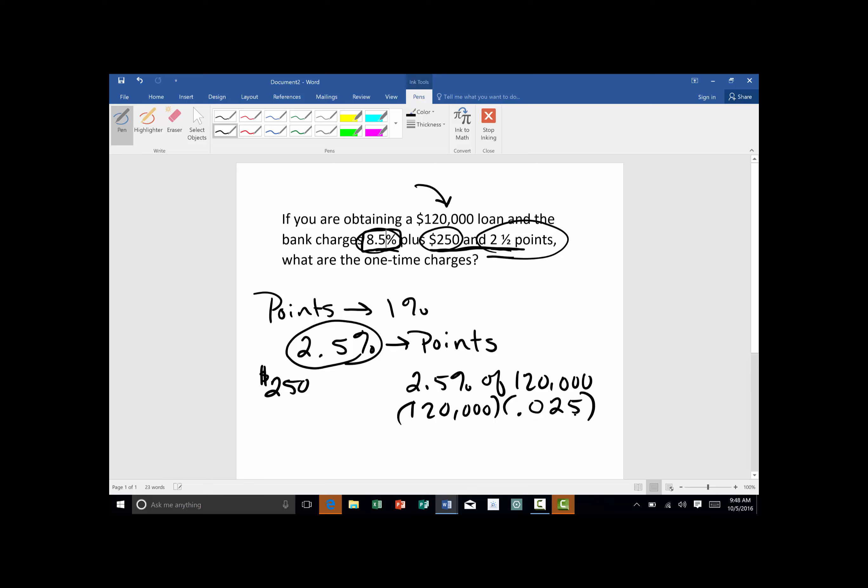Remember, you move your decimal two places to the left. So $120,000 times 0.025 is $3,000.